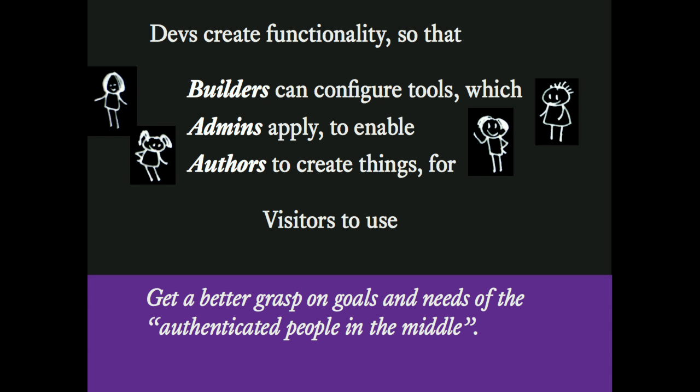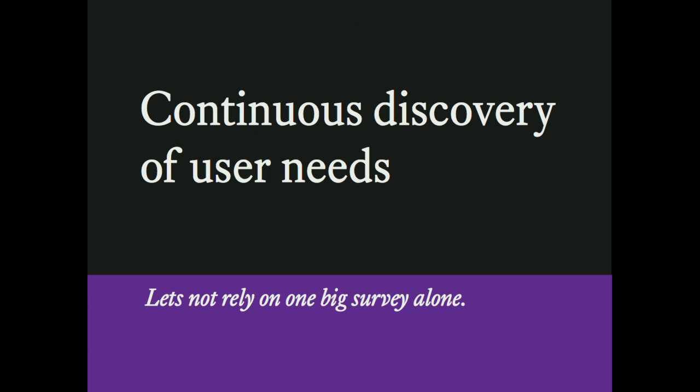Who are we doing this for? Dries discussed personas as well, and we have to focus on the authenticated people in the middle — people who don't code but have some permissions in Core to do stuff. We need a better grasp on the goals and needs of those people, which means finding a way to do continuous discovery of user needs. The survey is great, but we should get more insights on what 'content workflow' actually means for people — five people agreeing they need content workflow doesn't mean they all mean the same thing.